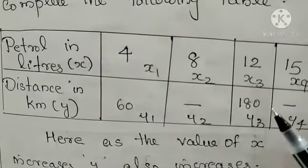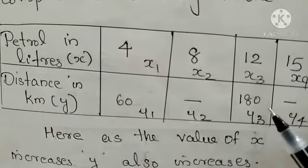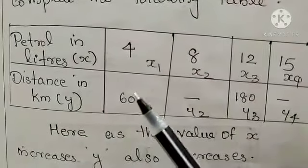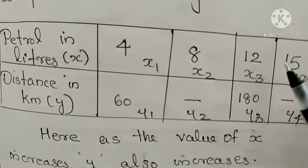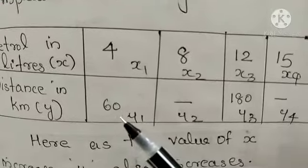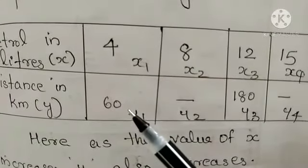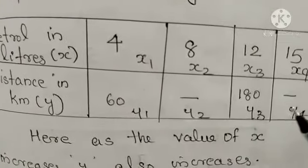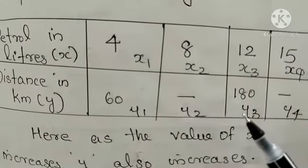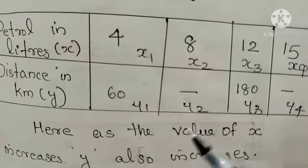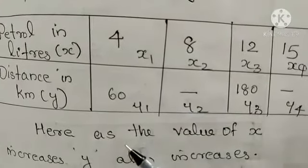And the corresponding value of y we have to calculate. Here if you observe, you can see that as x1, x2, x3, x4 are increasing, the corresponding values of y, y1, y3 also are increasing. So here which proportion we have to use? Direct proportion.